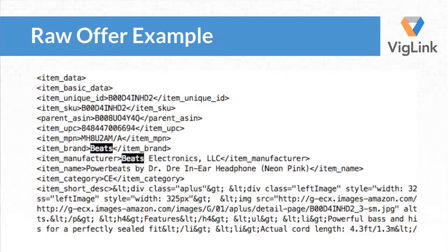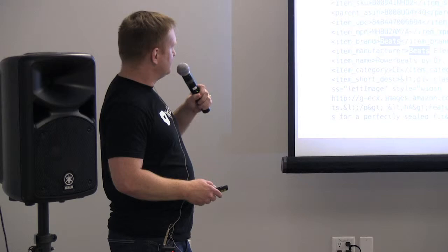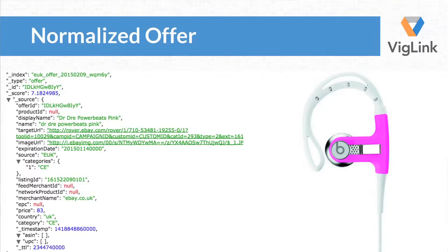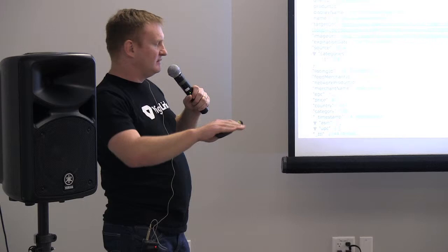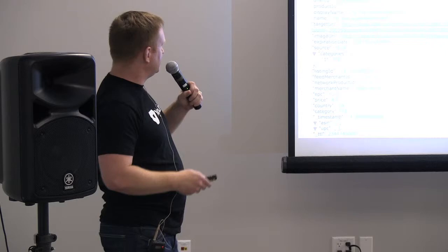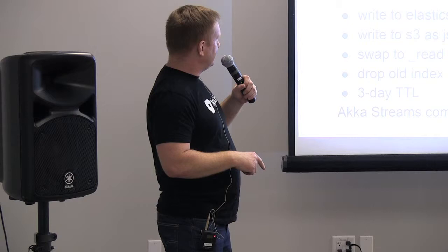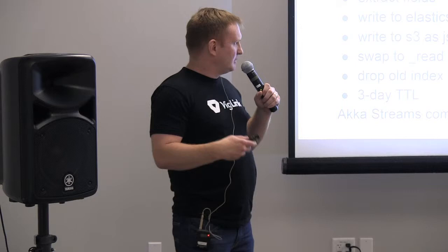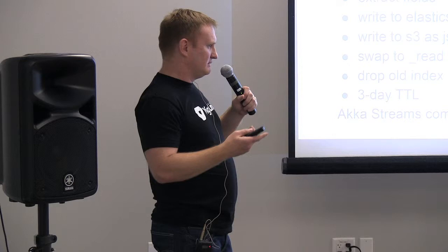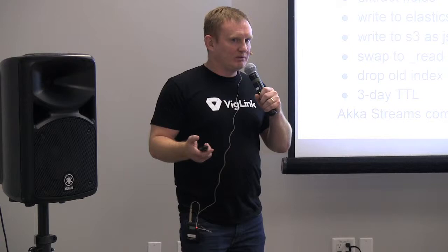To make this concrete, here's an example of a feed we get with some in-ear headphones — pink in-ear headphones. We get gigabytes of this kind of thing every day, and we turn it into a normalized JSON document. There's a picture, an image URL, things like a category — it's in consumer electronics. We have a fairly flat categorization hierarchy at the moment. The process is: we parse these feeds, extract the relevant fields, and write them to an Elasticsearch index suffixed with underscore-write. Concurrently we'll write to S3 as JSON, which is appropriate for analytics workloads. When the write is done, we'll swap it — call it underscore-read — and drop the old index. These things stay around for three days; we don't want stale offers in the catalog and if things are working correctly we refresh them daily.